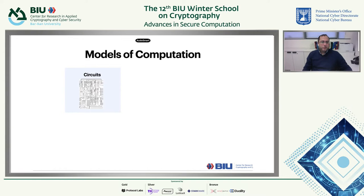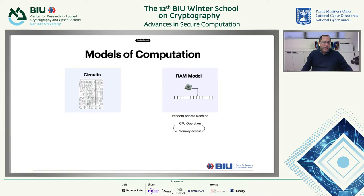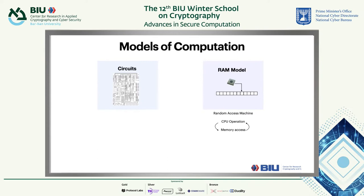When we all studied models of computation, we talked about Turing machines and finite automata. Two models widely used in the real world are circuits and RAM. In circuits, we have gates and wires; in Boolean circuits, each wire carries a bit, and gates can be AND, OR, XOR, and so on. In the RAM model, we have a CPU and memory. The CPU performs operations — it can read, add or multiply register values — then goes to memory to write or read information. This continues in cycles.